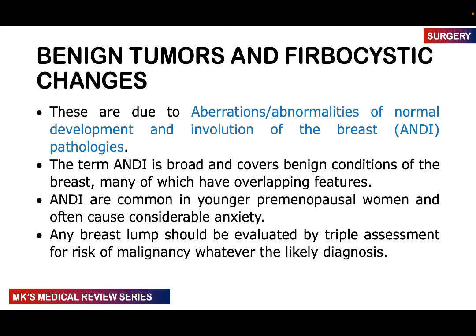Benign tumors and fibrocystic changes are often due to ANDI pathologies — Aberrations in Normal Development and Involution of the breast. This covers multiple benign breast conditions with overlapping features. These ANDI pathologies are much more common in younger perimenopausal women and cause a lot of anxiety, but most are benign in nature. Any breast lump must be evaluated by triple assessment: clinical assessment, radiological assessment (mammogram or ultrasound), and pathological examination (FNA or true cut biopsy) — done to rule out malignancy.